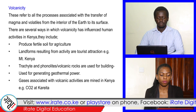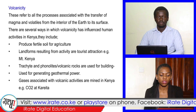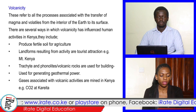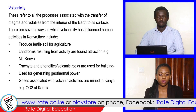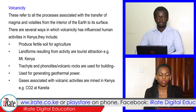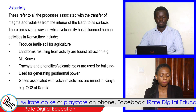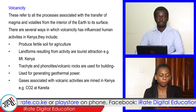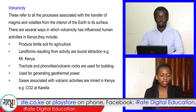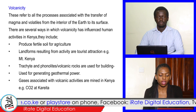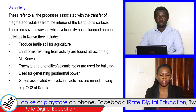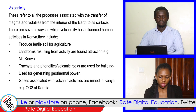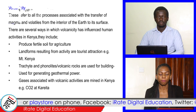Landforms resulting from volcanic activity are tourist attractions, for example Mount Kenya. Trachyte and phonolite, which are volcanic rocks, are used for building. Volcanic activity is used for generating geothermal power. Gases associated with volcanic activities are mined in Kenya, for example carbon dioxide at Kareita.